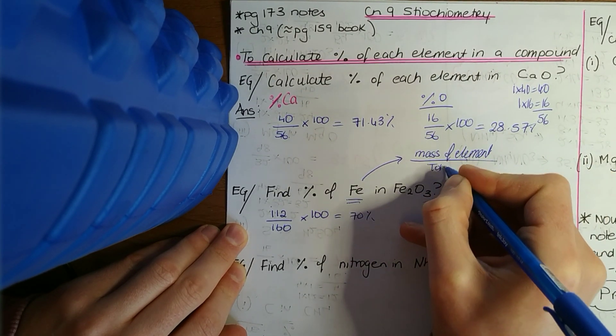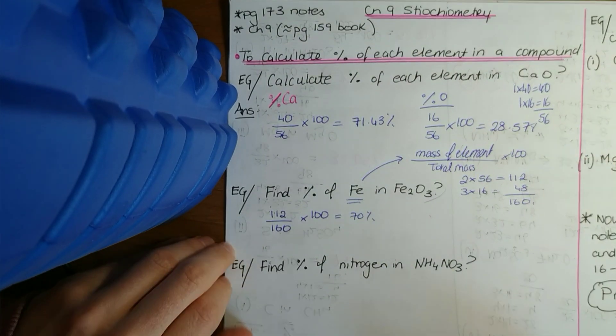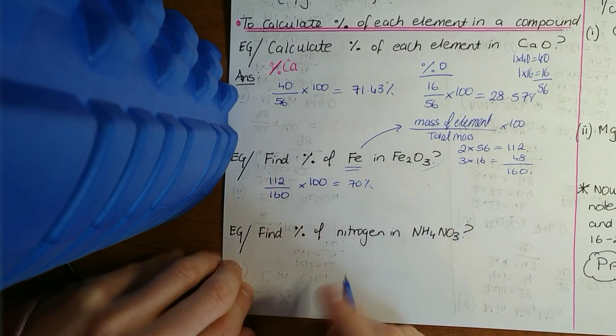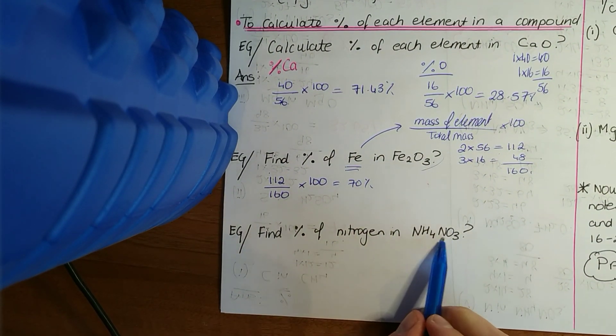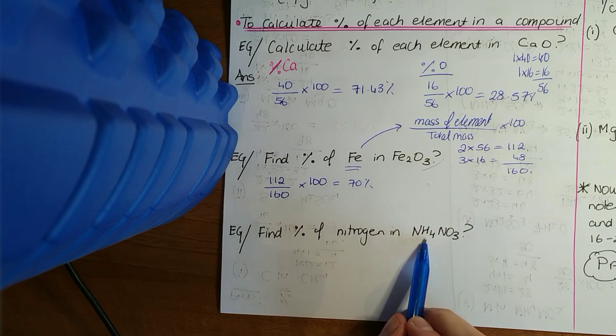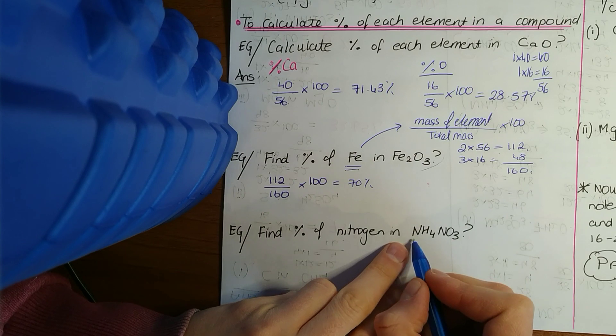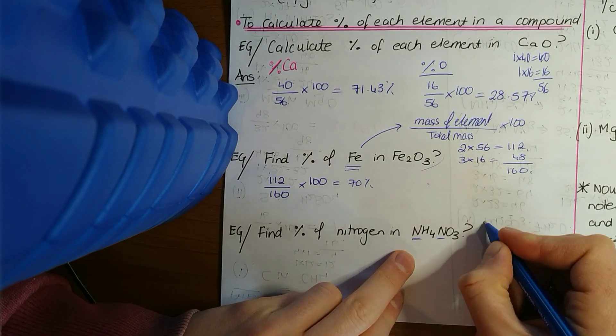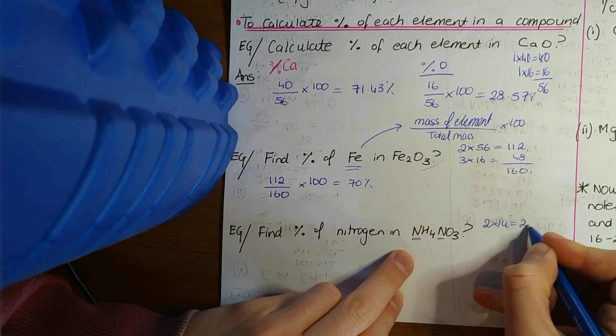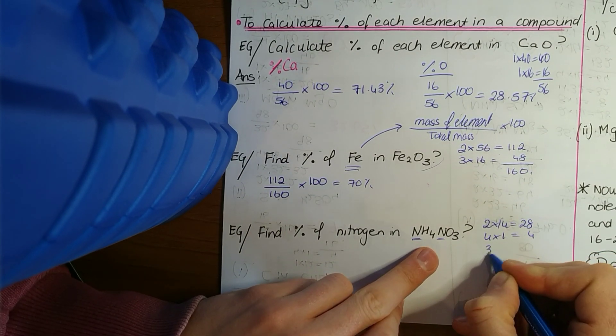So what you're doing is the mass of whatever element over the total mass, and then times that by 100. Next one: find the mass of nitrogen in ammonium nitrate. Ammonium nitrate, remember nitrate NO₃ minus, your brown ring test for nitrates. That was your positive radical. NH₄ plus.